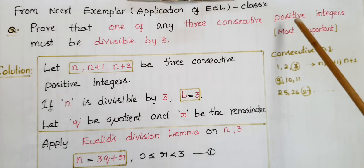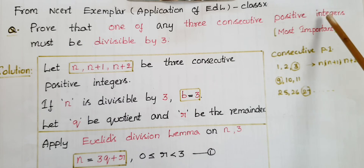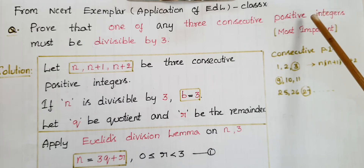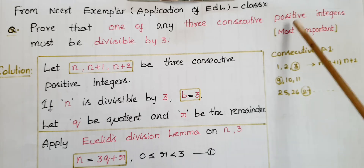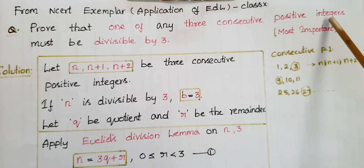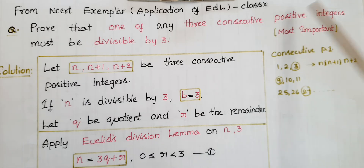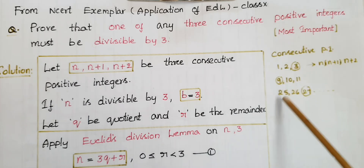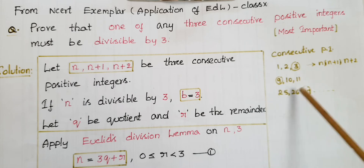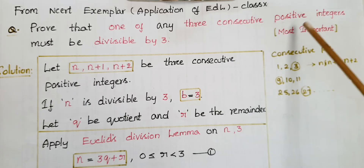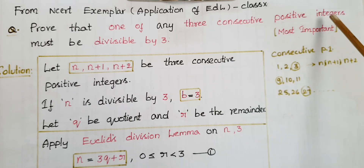Positive integers means the numbers which are having positive signs, so 1, 2, 3, 4, etc. are called positive integers. Consecutive positive integers means the numbers which are in order, like 1, 2, 3 or 9, 10, 11 or 25, 26, 27 — these are called consecutive positive integers.